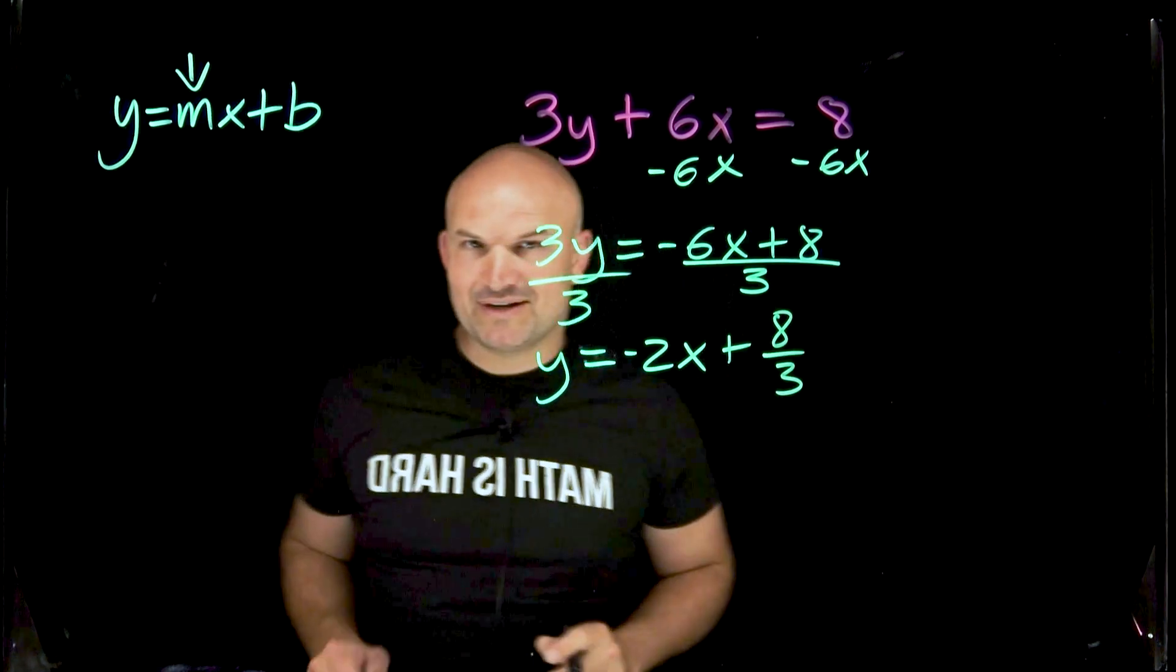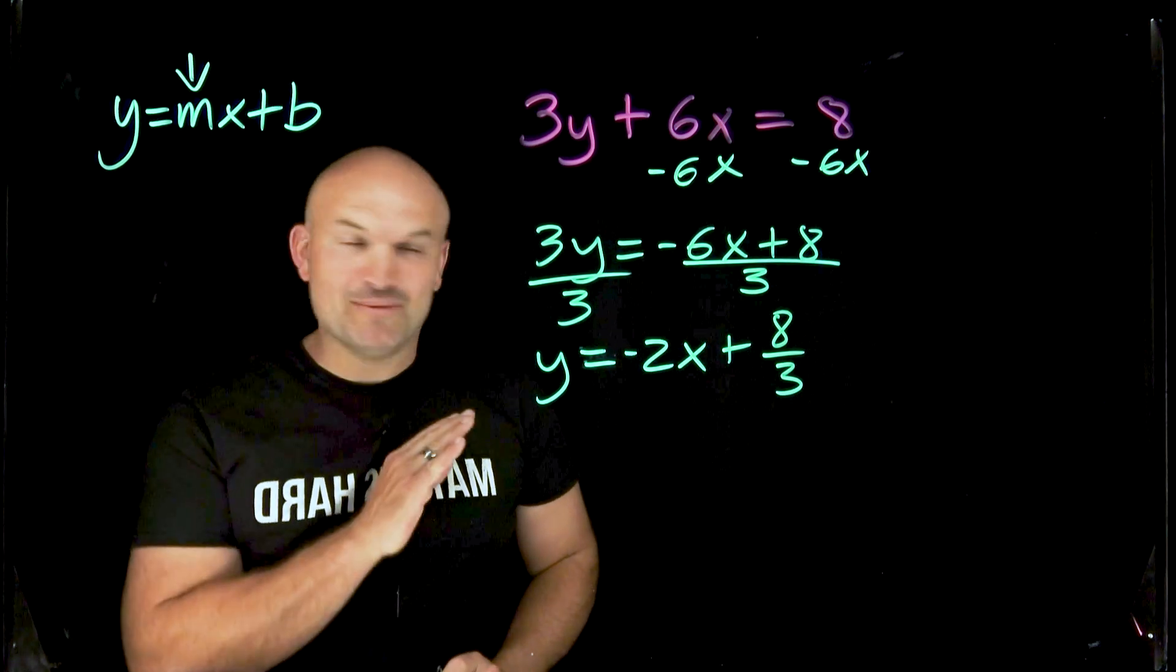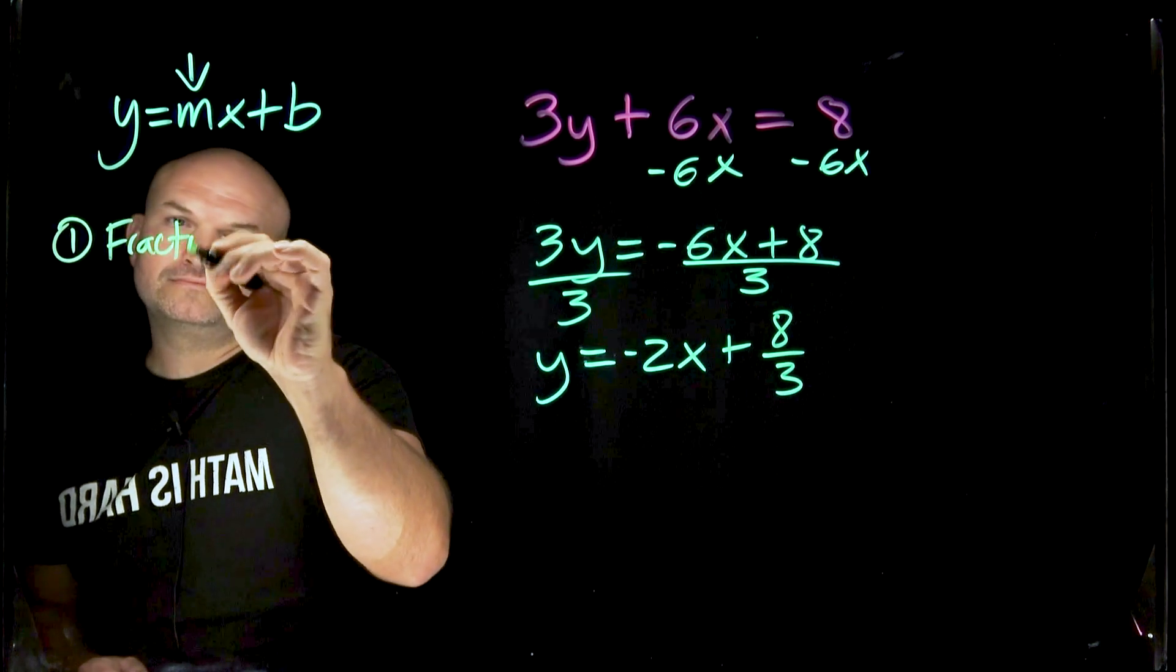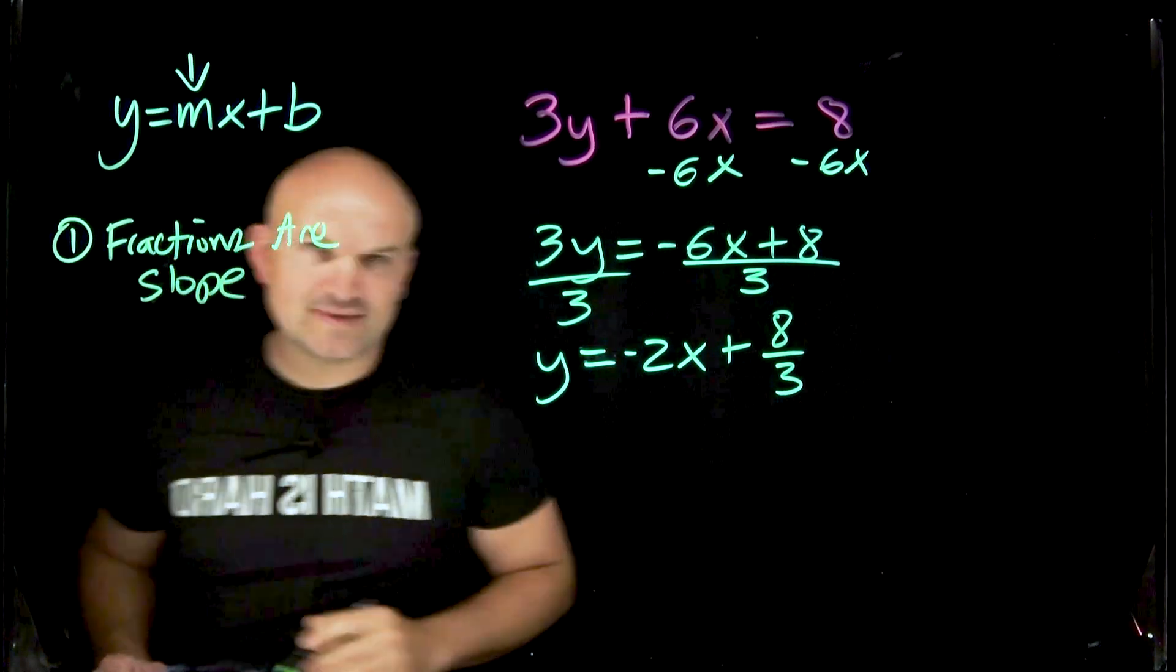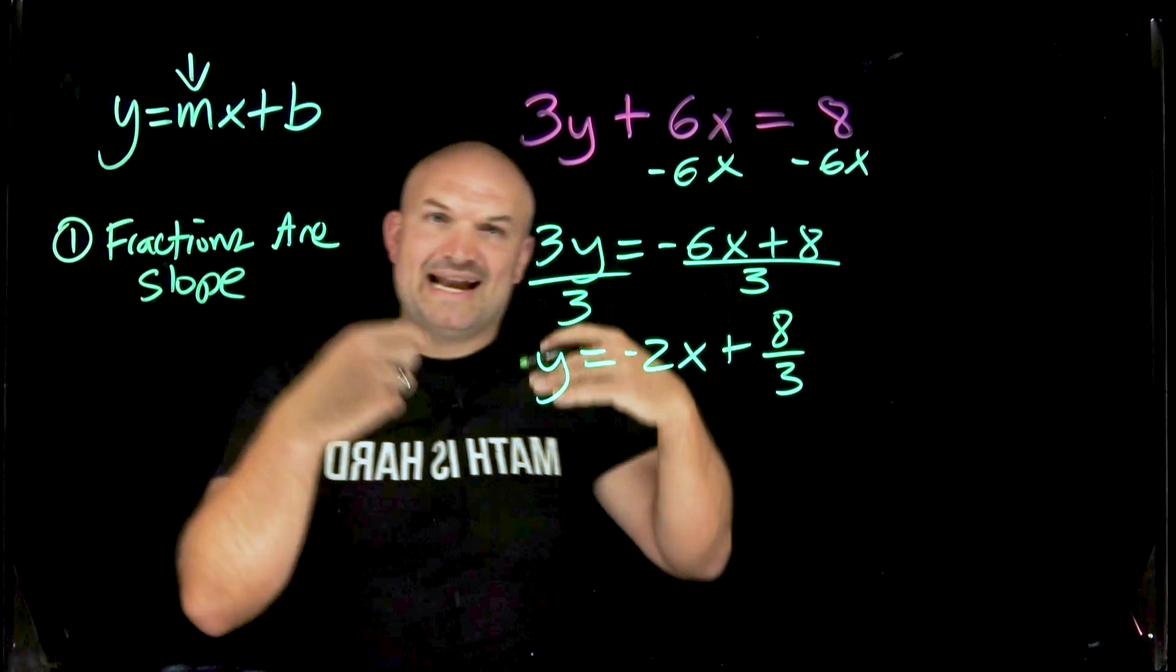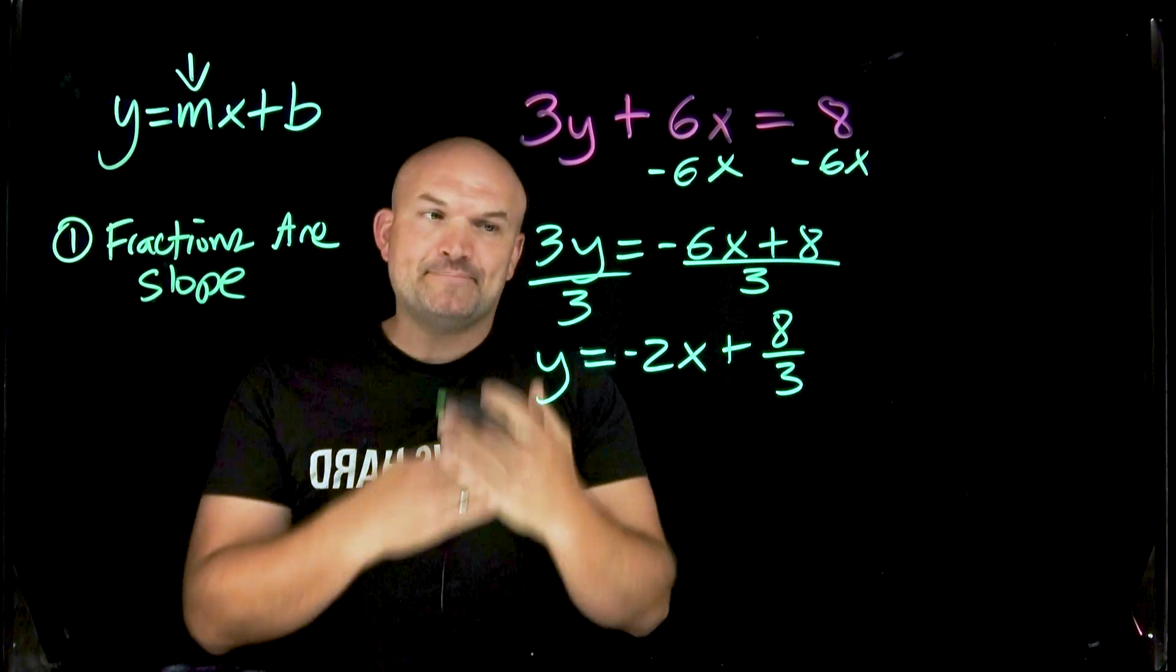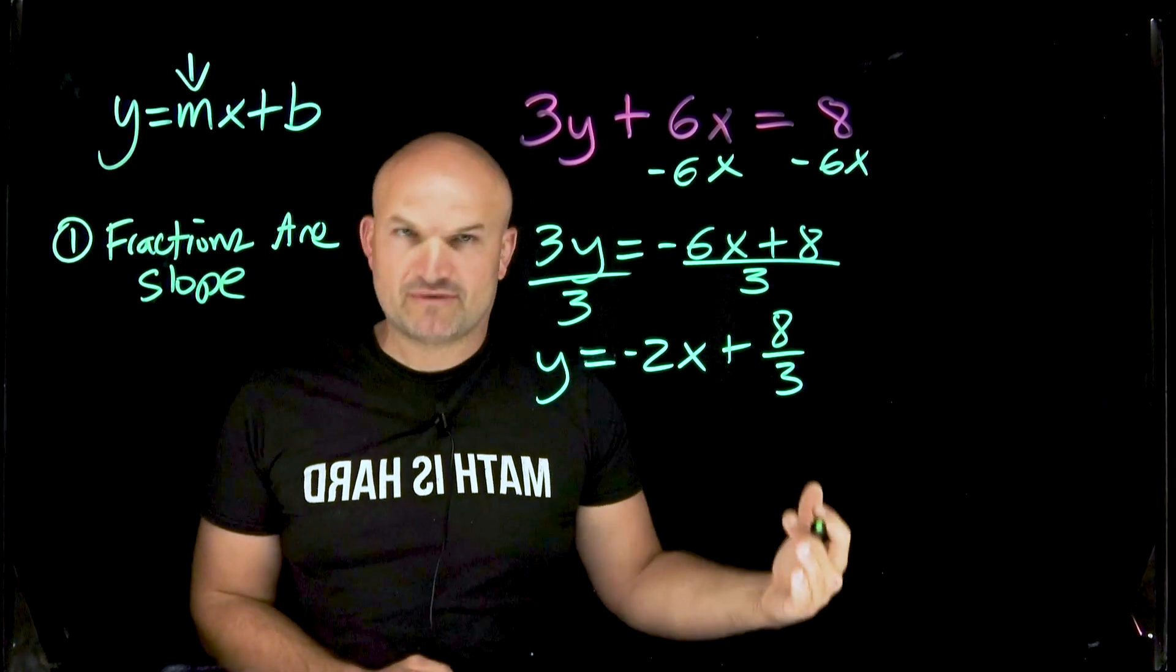All right so here comes the first mistake. The first mistake is to always take no matter what fraction you see and create that as the slope. Now a lot of times when we think about slope, m, we think about that as the rise over the run, the change in the y over the change in the x.